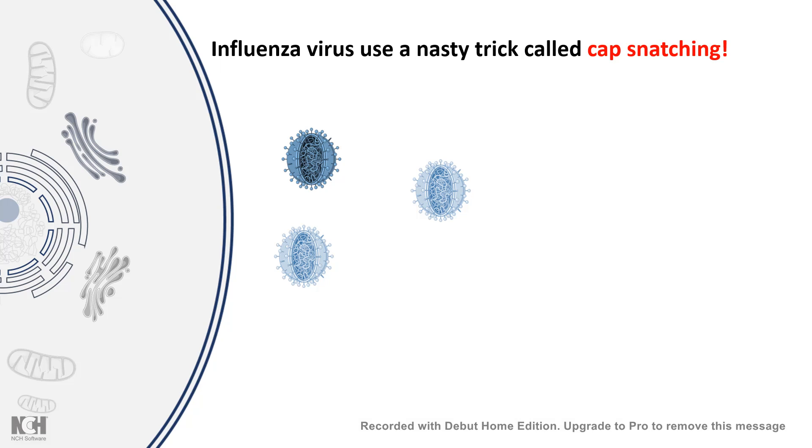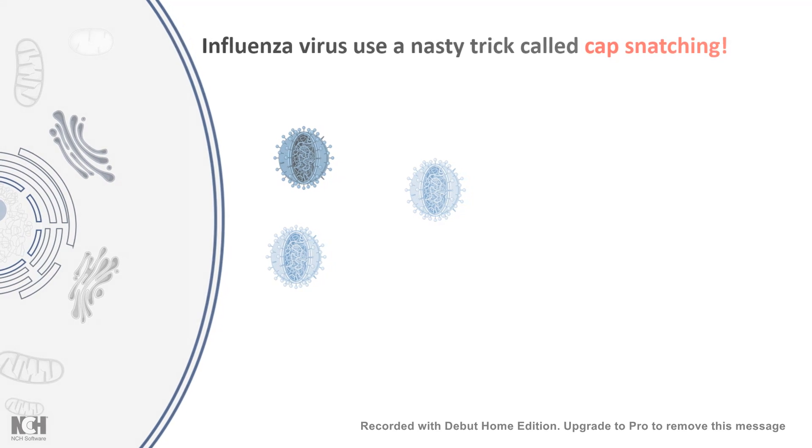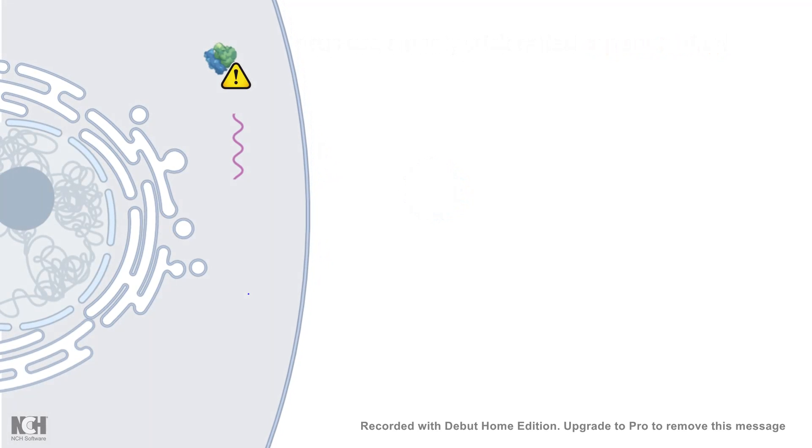This capping process is very well understood by viruses. They understand this basic and fundamental host machinery to use for their own welfare. It turns out they play a nasty trick called cap snatching. Influenza virus is a negative-stranded RNA virus. It injects genetic material which is a negative-stranded RNA, but it is not detected by the host ribosomes because the host ribosome cannot detect a negative-stranded RNA. It has to convert it into positive-strand RNA.